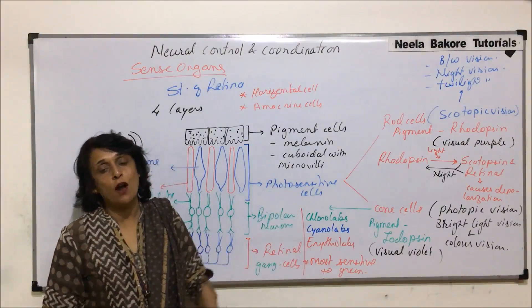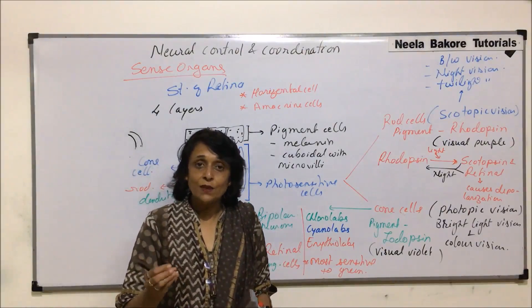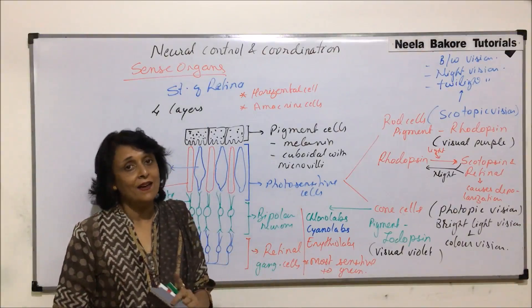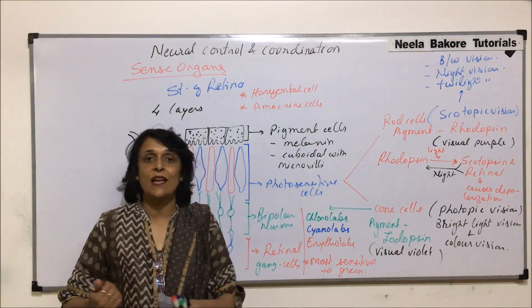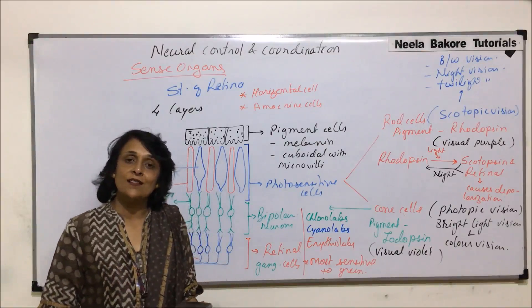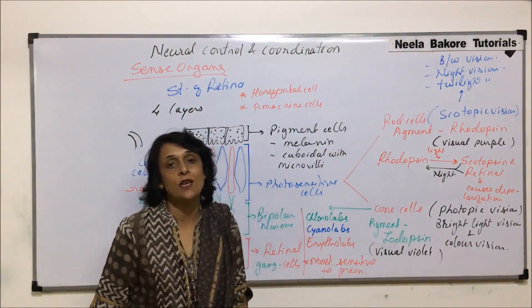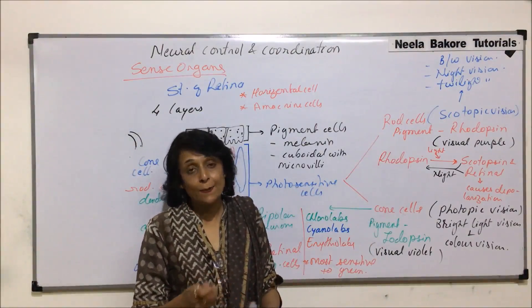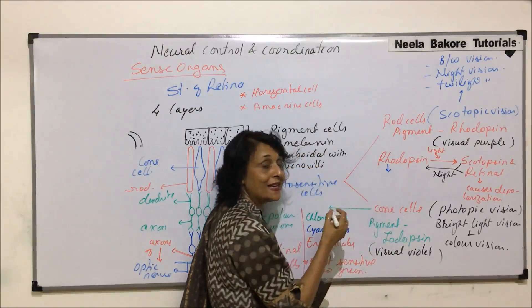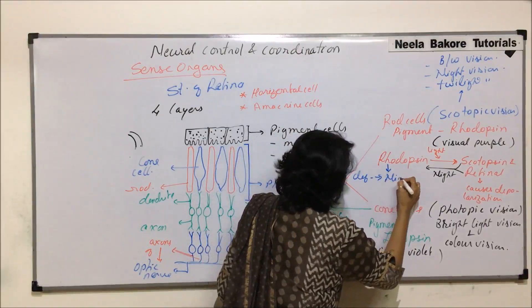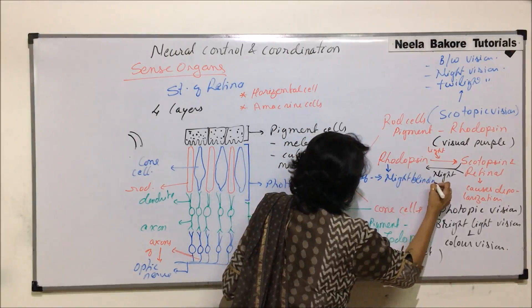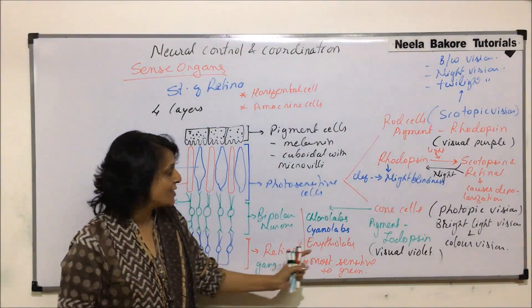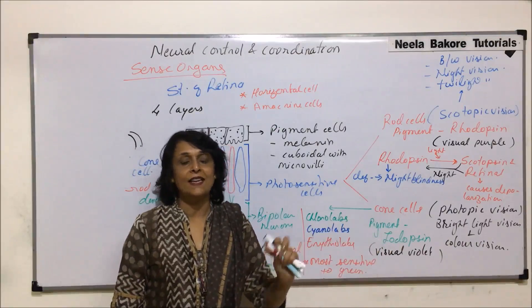Animals with color vision have both rod and cone cells. Depending upon what type of lifestyle they exhibit, they would have different types of cells in their retina. We are able to see in dim light as well as have color vision, so we have pretty much equal numbers of rod cells and cone cells. Deficiency of rhodopsin causes night blindness. These pigments are essential for us to see in dim light as well as for color vision when light is available.